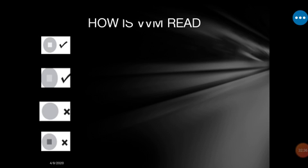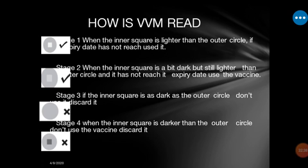Next is a description of how the VVM is read. Looking at the four stages: stage one — when the inner square is lighter than the outer circle and the expiry date has not been reached, use it. The inner square appears very white or bright.